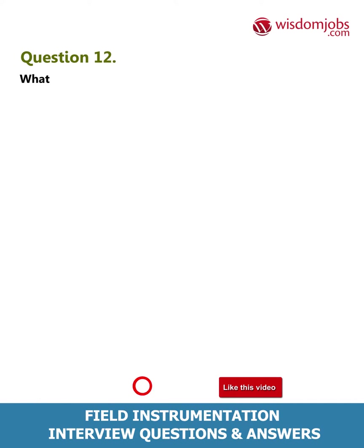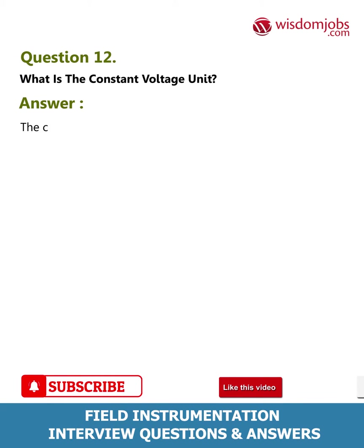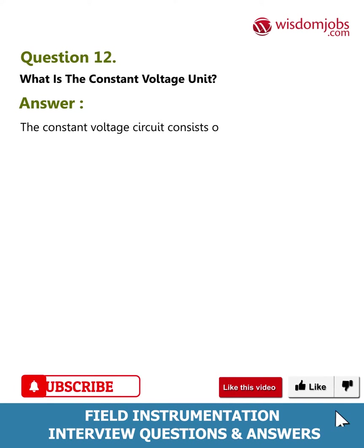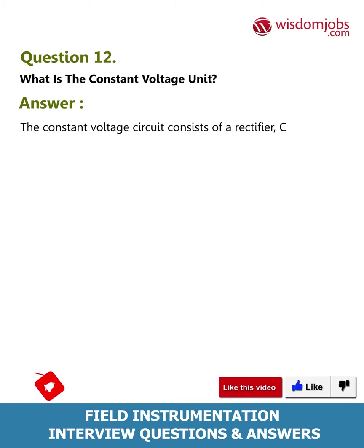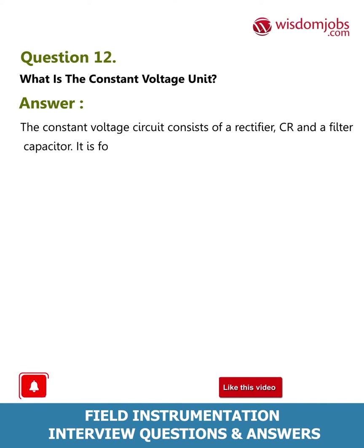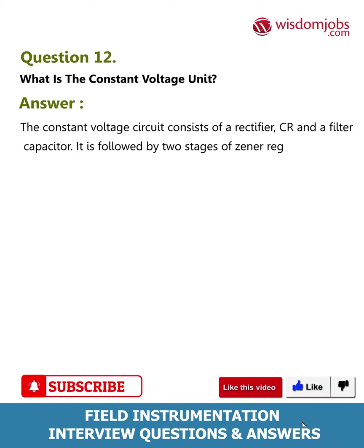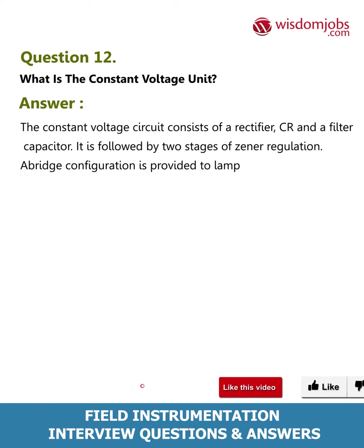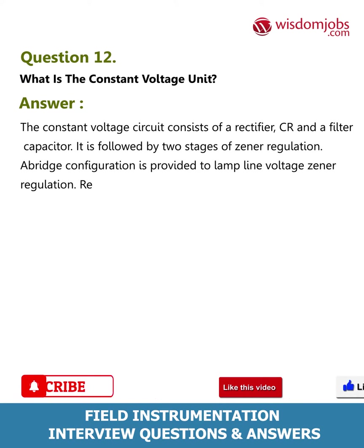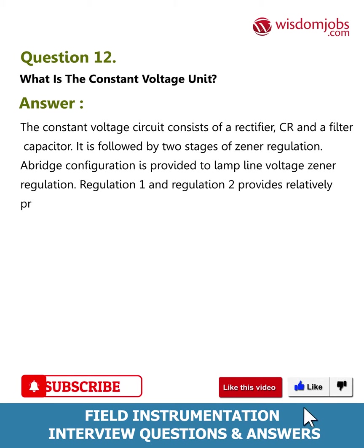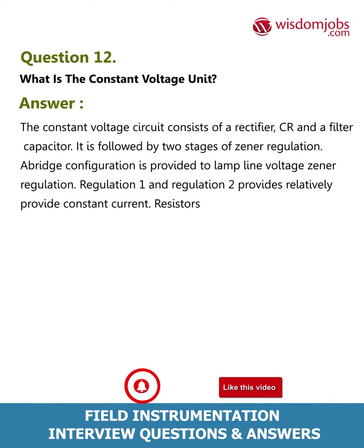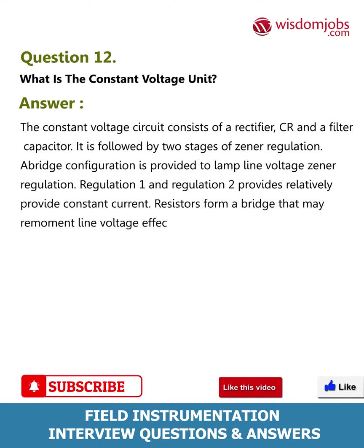Question 12: What is the constant voltage unit? Answer: The constant voltage circuit consists of a rectifier, filter capacitor, followed by two stages of Zener regulation. A bridge configuration is provided to dampen line voltage variation. Regulation one and regulation two provide relatively constant current. Resistors form a bridge that may reduce line voltage effects.